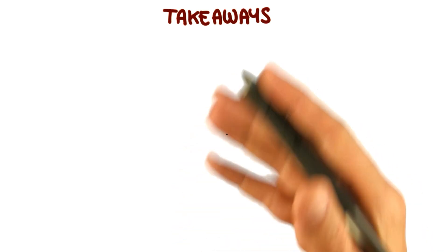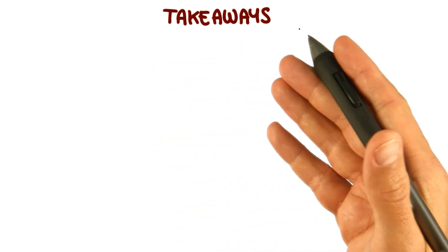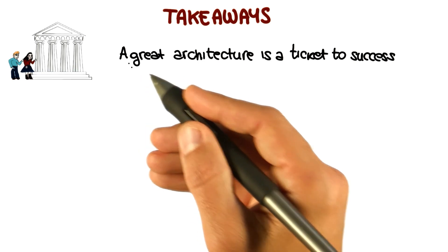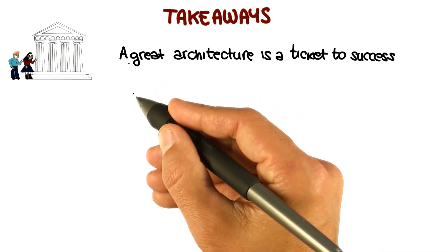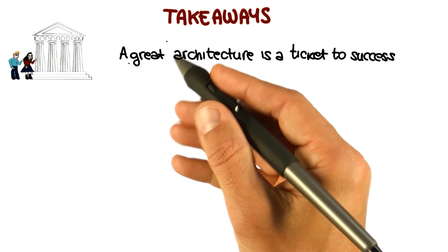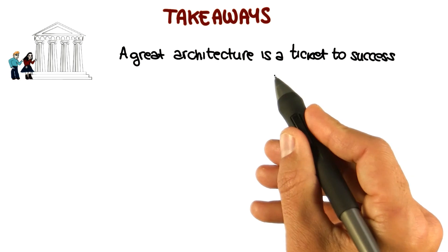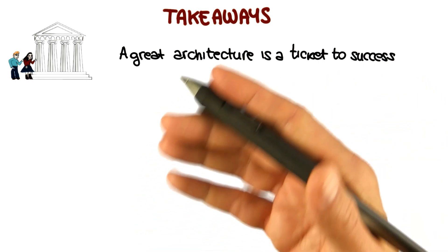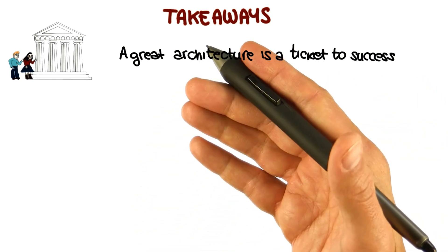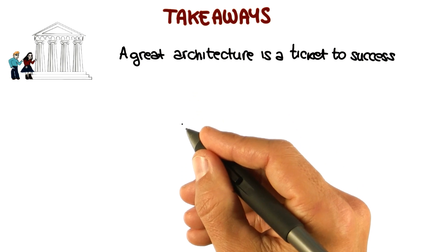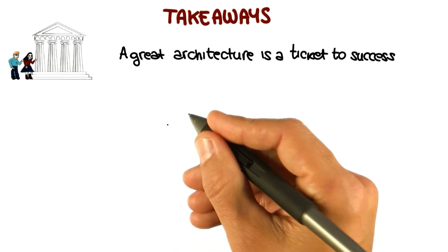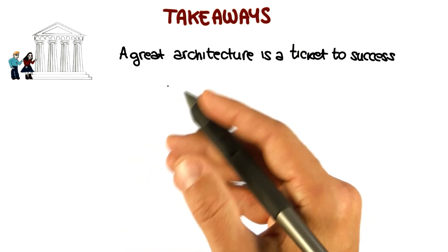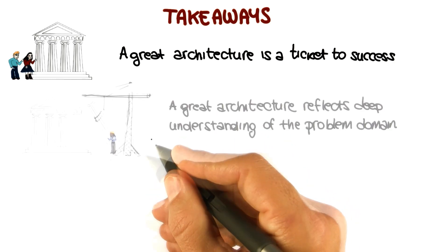I want to conclude this lesson with three take-away messages. The first one is that having an effective architecture is fundamental in a software project. A great architecture is a ticket to a successful project. Although a great architecture does not guarantee that your project will be successful, having a poor architecture will make it much more difficult for your project to be successful.